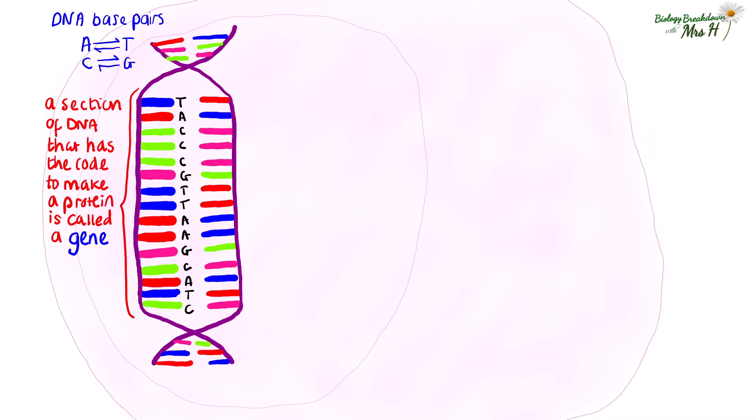If we look at the code of the gene on the left hand side, the template strand of the DNA, then using the base pairing rules we can work out the other complementary base pairs on the other strand of DNA. T goes with A, A goes with T, C goes with G and so on all the way down.